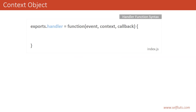In previous videos, we have seen what a handler function is. Basically, a handler function is the entry point inside a Lambda function, which means this function is invoked when you invoke a Lambda function. The syntax for the handler function in Node.js accepts three arguments: the first argument is the event object, the second is the context, and the last is the callback method. We have seen the event object in previous videos, and in this video we will see about the context object.